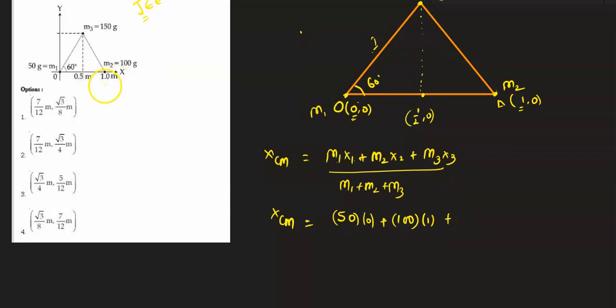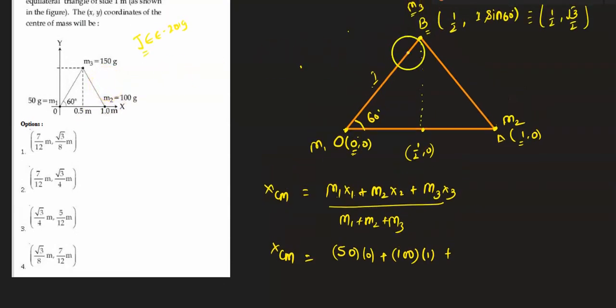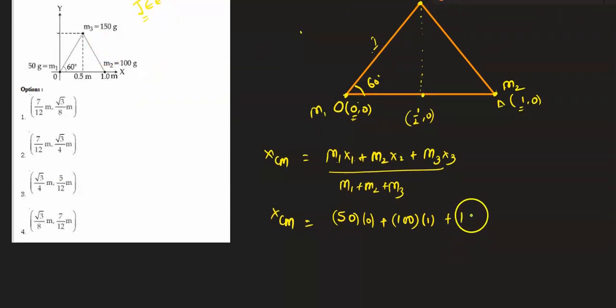M3 is 150 grams and the x coordinate is 1/2, so I can write 150 times 1/2, upon summation of the masses m1 plus m2 plus m3. That is 50 plus 100 plus 150, so that is 300.